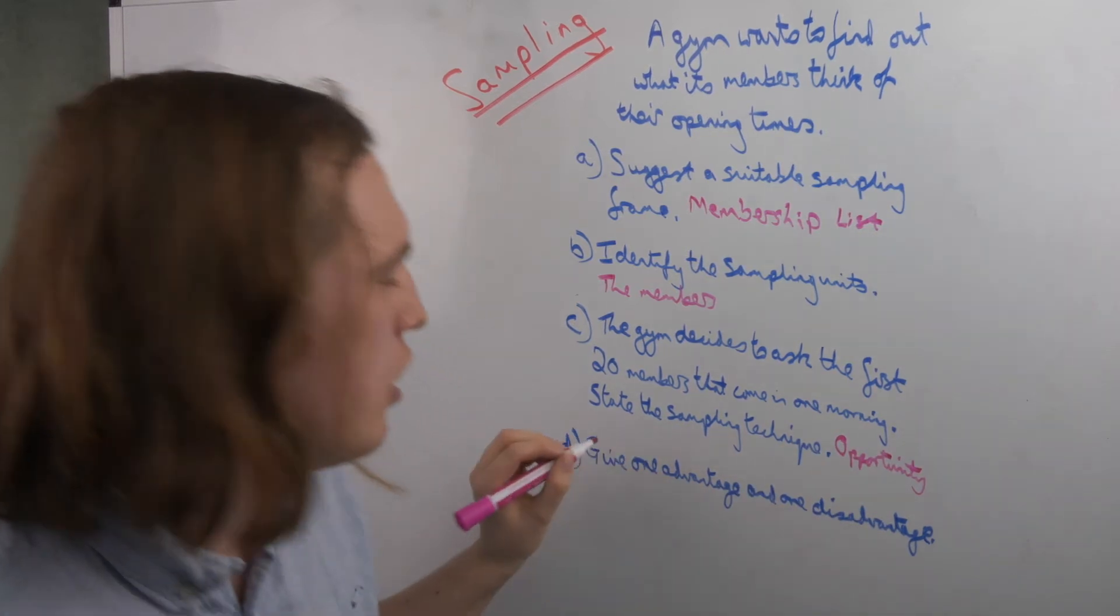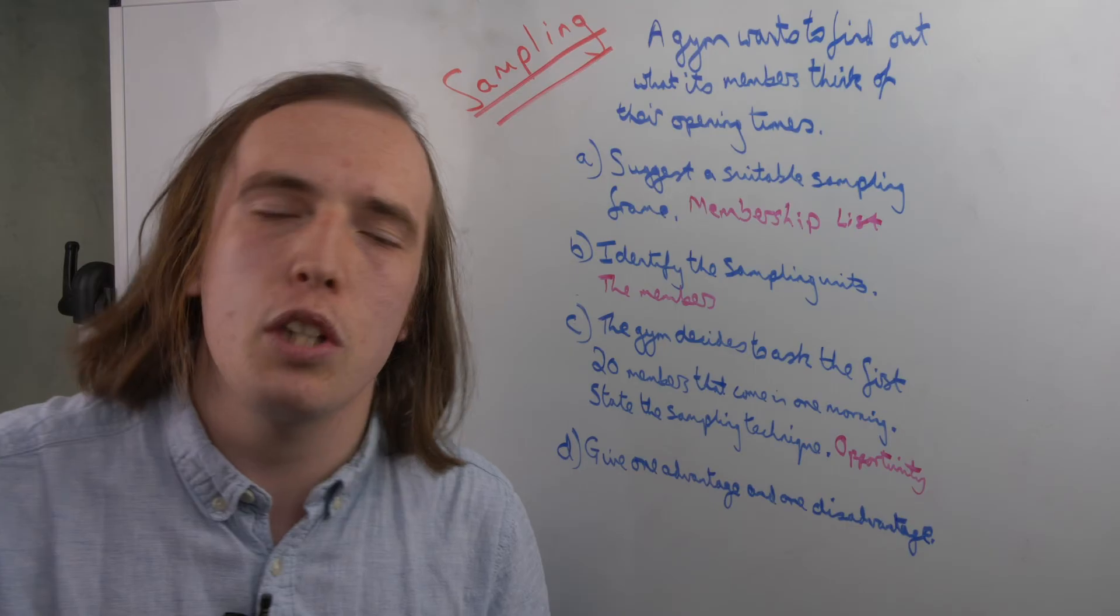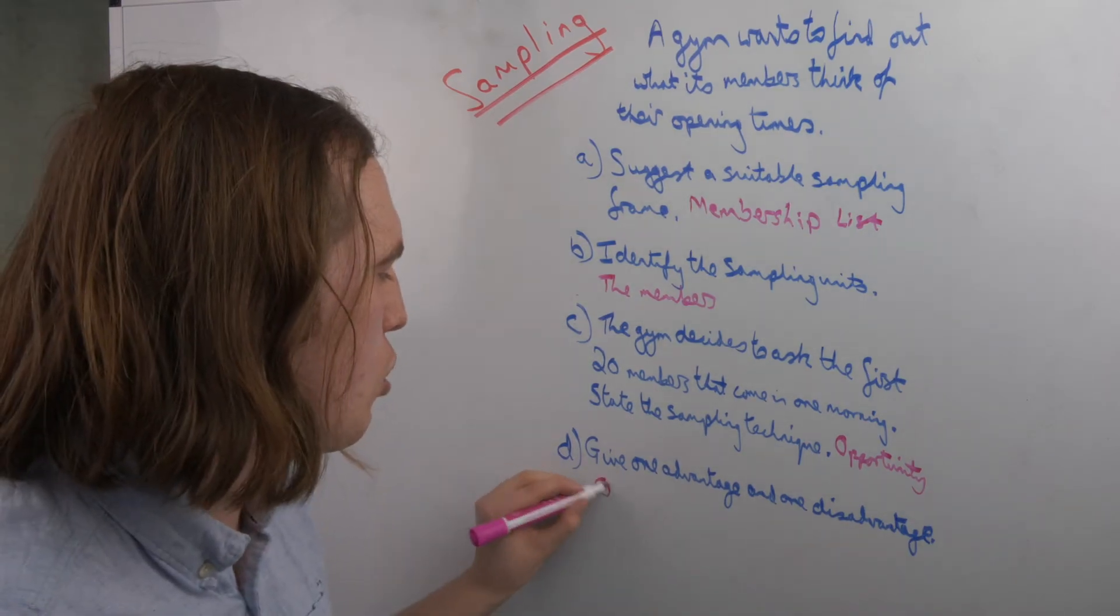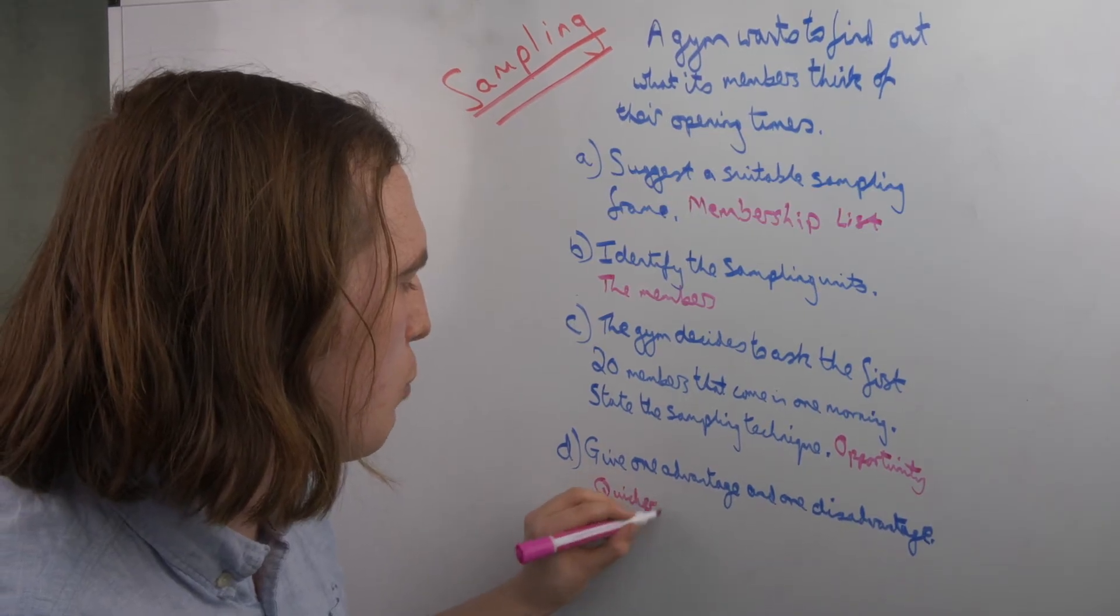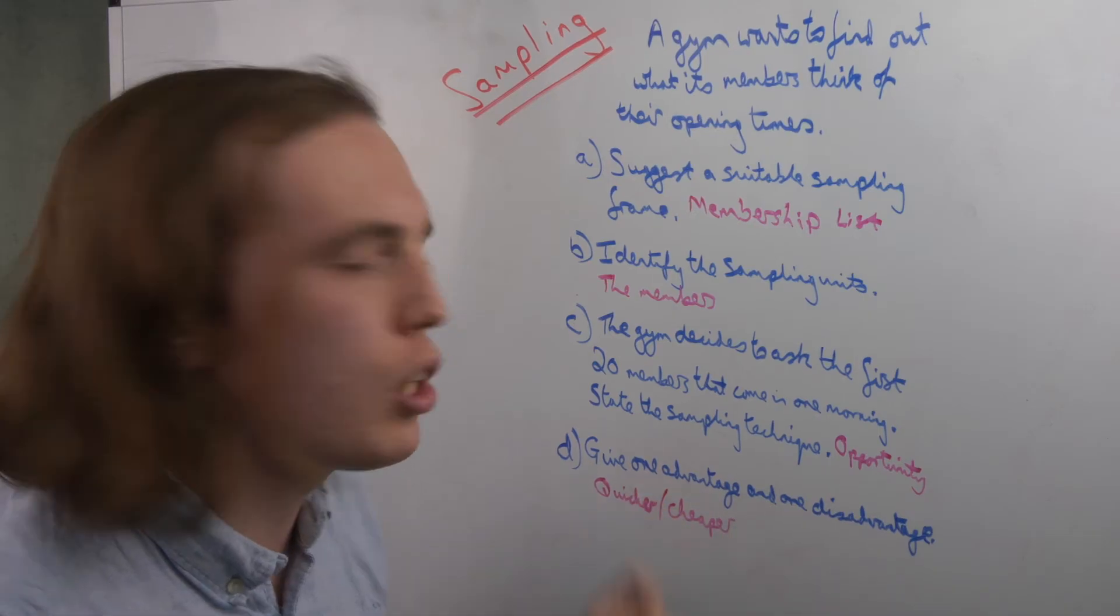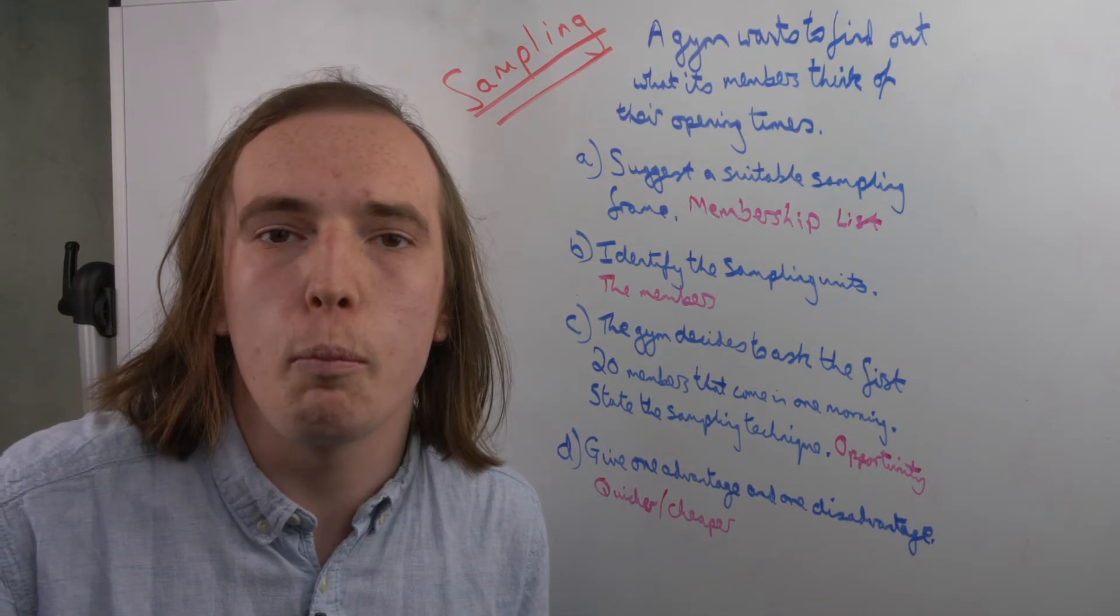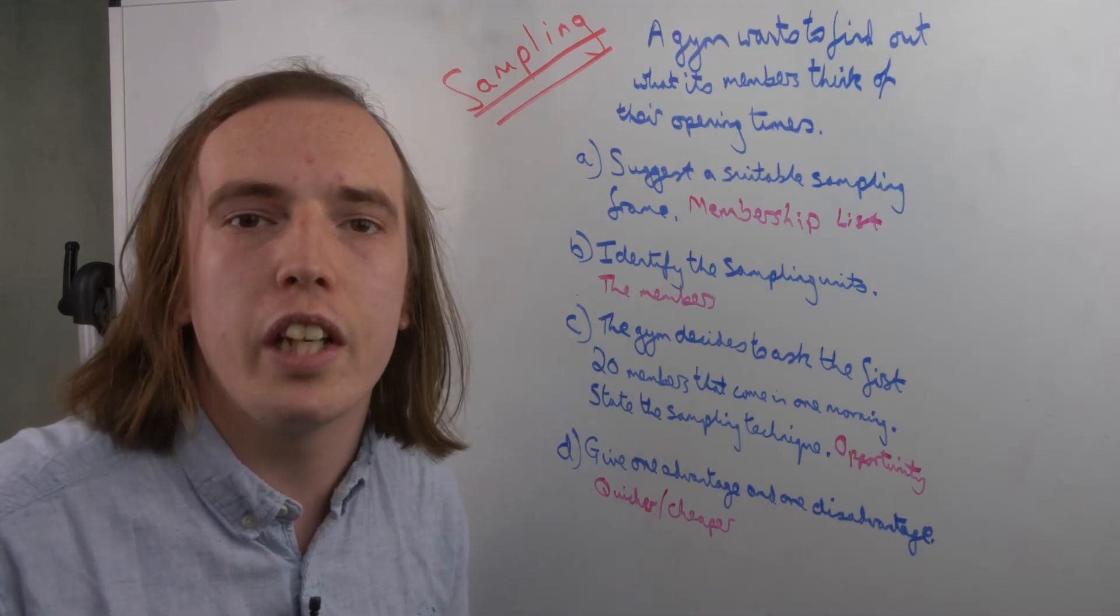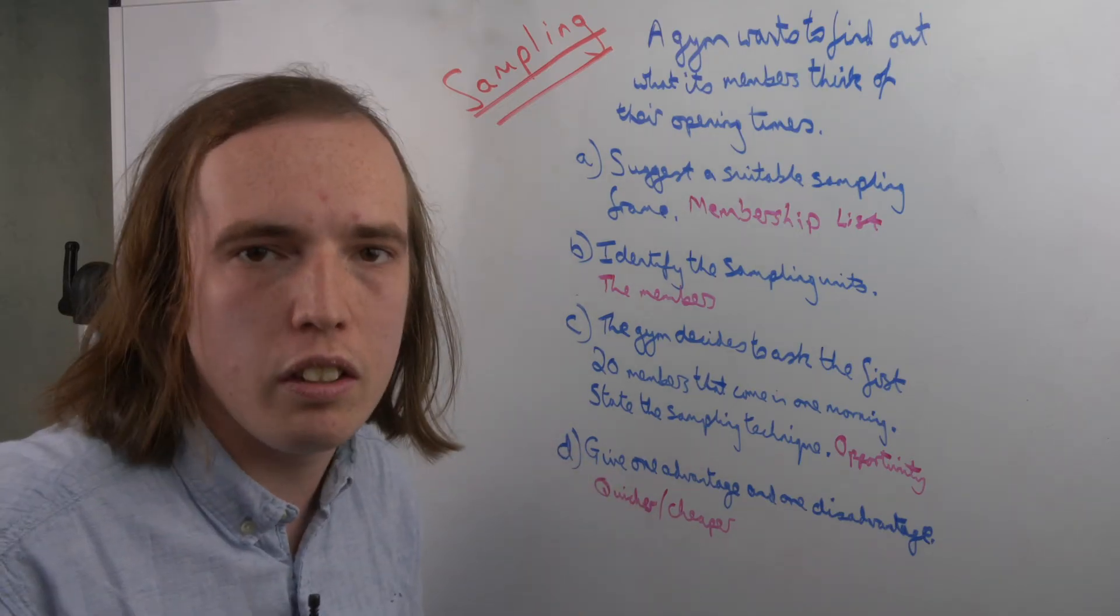And then, for D, it wants one advantage and one disadvantage of this. Well, as we said before, an advantage of opportunity is that it's quick or quicker than others. Because also, you could say cheaper. Because if you're just going up to ask certain people, you don't have to pay as much—say, potentially equipment, or even just to pay the people taking the survey, because they're not going to be around as long. Again, linking back to that quicker aspect.